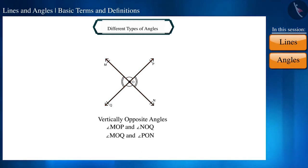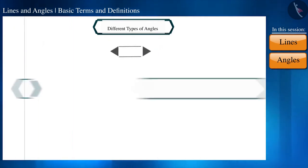Can you tell the name of the second pair? Yes, angle MOQ and angle PON is the pair of vertically opposite angles.